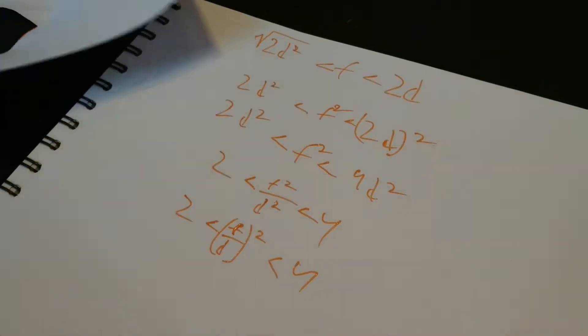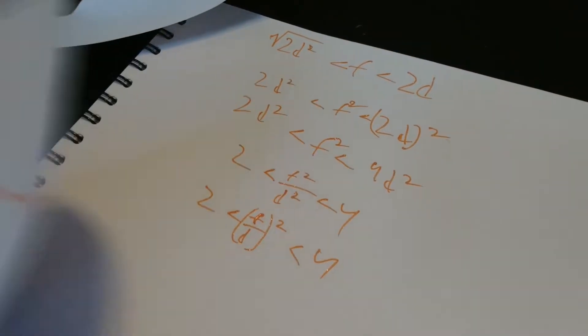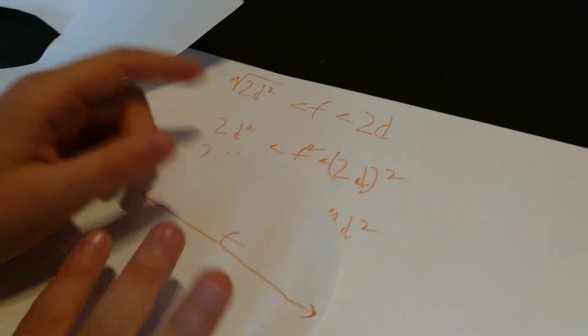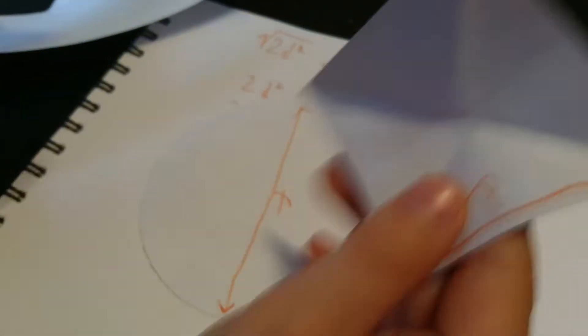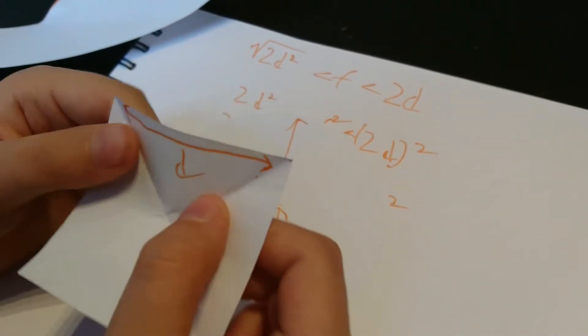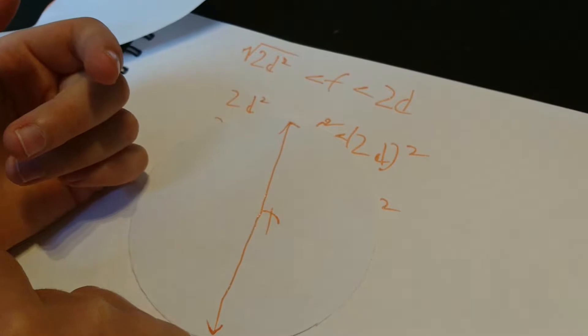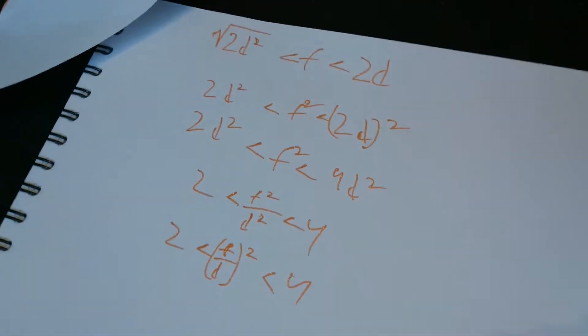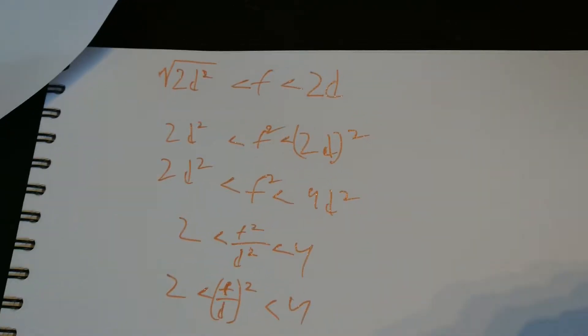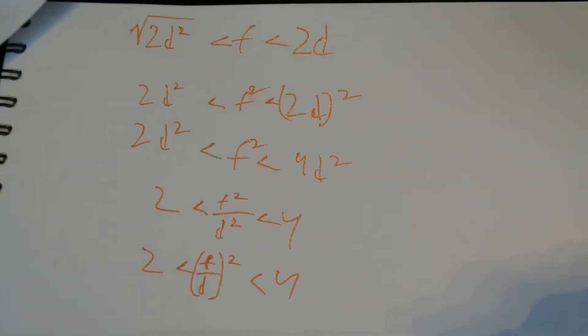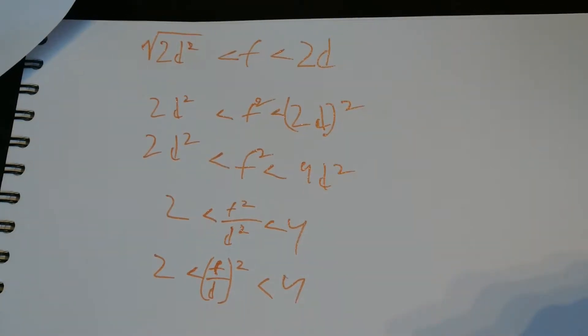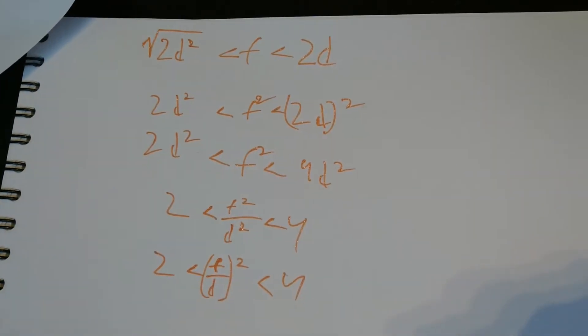So basically, I've called the diameter of the circle F, and the length of the square hole I've called D. And basically, you set up an inequality, which is that the square root of 2D squared is less than F, is less than 2D.